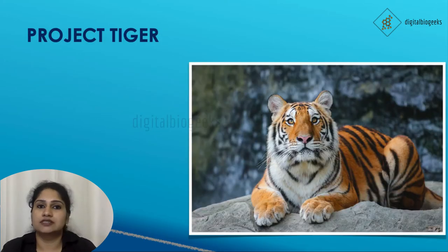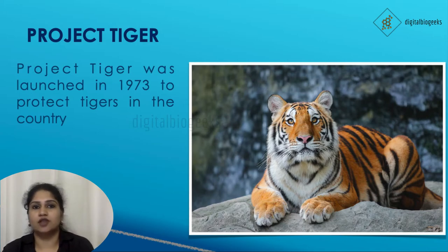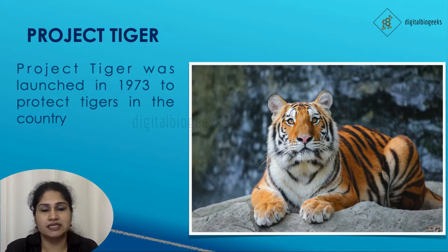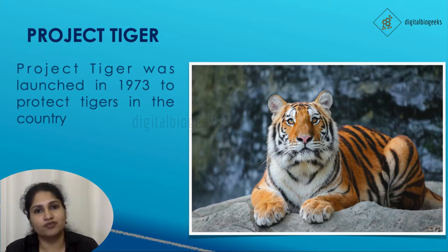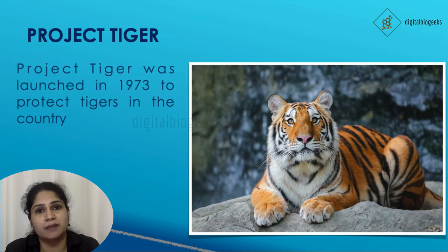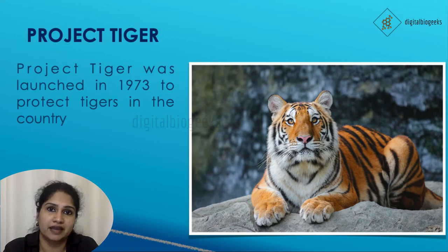Project Tiger was launched by the Indian government in 1973 to protect tigers in the country. The objective of this project is to protect and maintain the population of tigers in our country, as the number of tigers is decreasing day by day in our forests.